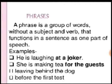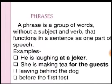The title is 'Phrases.' When we talk about phrases, a phrase is a group of words without a subject and verb that functions in a sentence as one part of speech. Here are a few examples: 'he is laughing at a joker,' 'she is making tea for the guests,' 'leaving behind the dog,' 'before the first test.' These are examples of phrases, and we will cover their meaning and various types.